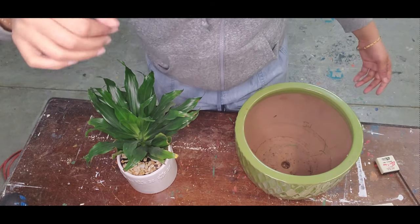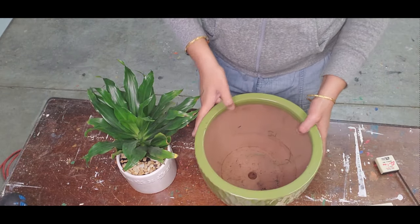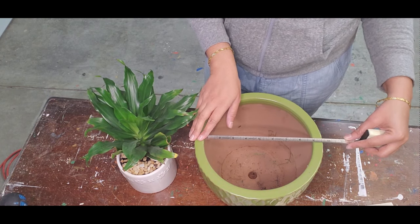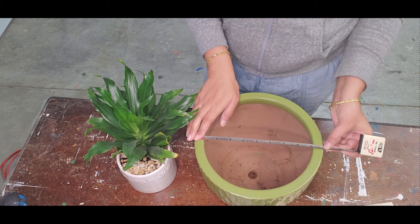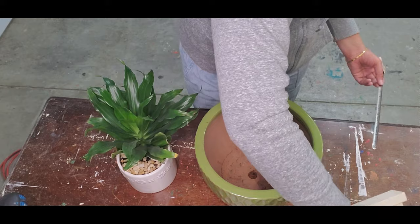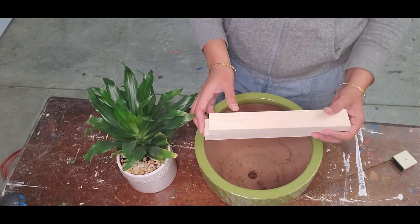First, I am going to make the stand for this bigger one. I have measured the outer diameter of the planter and the height. The diameter is 9.75 inches and the height I need is 12 inches. You can increase or decrease the height as you need.